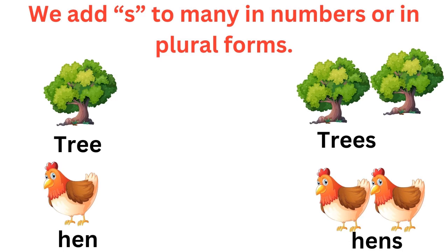Now the question is, jab plural cheezein hoti hain, to hume kaise pata chalega ki yeh plural hai? Uske saath hum S lagate hain. Kya lagayenge? S lagayenge. We will put S with it. Like, this is a tree — yeh ek tree hai, hamne tree likha because yeh one in number hai. But yahaan pe hain trees — because they are two in numbers, they are many trees, they are plural in numbers. So tree ka kya ho jayega? Trees.